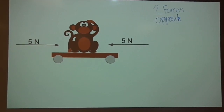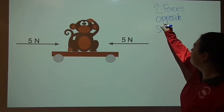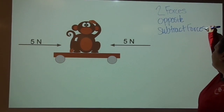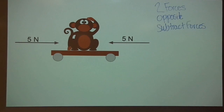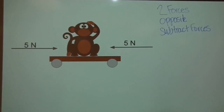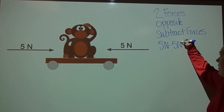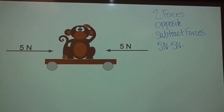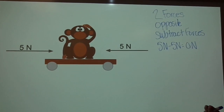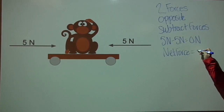When our forces are acting in opposite directions, we're going to subtract the forces. You're going to subtract the smaller force from the larger force. But in this example, because they're both the same number, it doesn't matter. So we're going to take 5 newtons minus 5 newtons — and we should get 0 newtons. Our net force for this example equals 0 newtons.